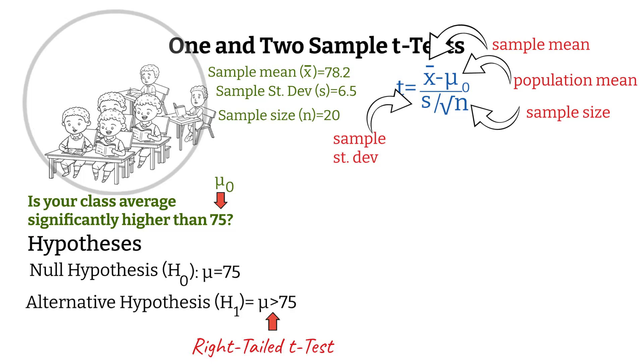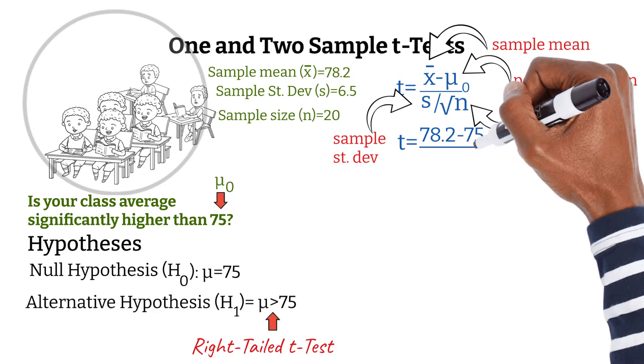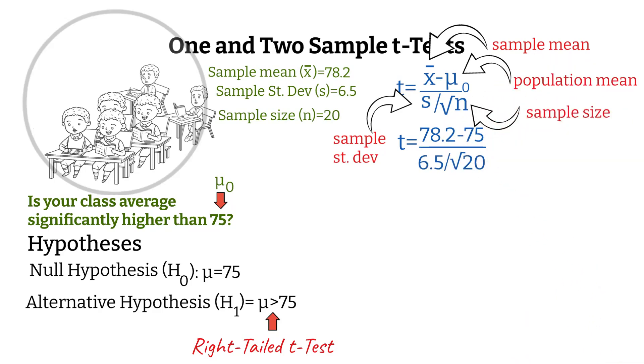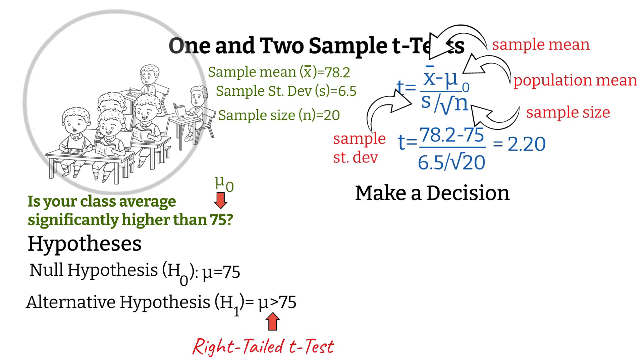The t-statistic is a way of measuring how far your sample mean is from your expected mean. A larger t-value means the difference is bigger compared to what we'd expect from random variation. t is equal to 78.2 minus 75 over 6.5 over the square root of 20, which is approximately equal to 2.2. Now it's time to make a decision. There are two main ways to decide if your result is statistically significant. The p-value approach, which we'll go over in another video, linked below. And the critical value approach, which we'll use now.